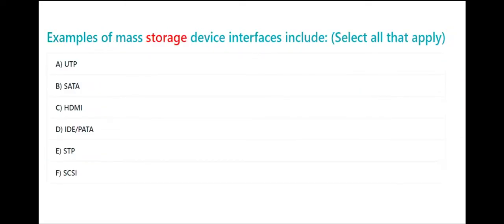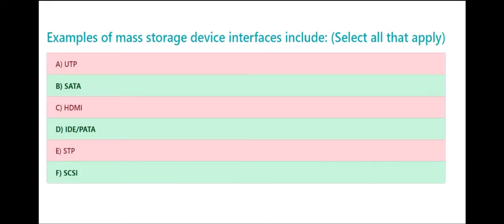Examples of mass storage device interfaces include, select all that apply: A. UTP B. SATA C. HDMI D. IDE/PATA E. STP F. SCSI. The correct answers are B. SATA, D. IDE/PATA, and F. SCSI.